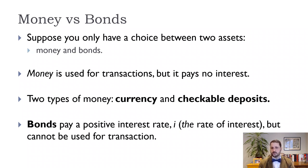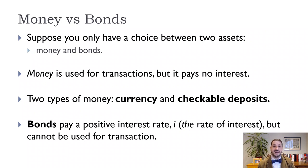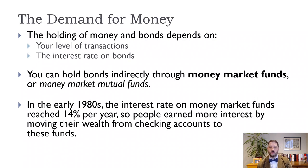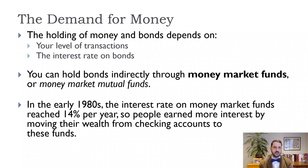The two types of money we focus on — included in what's called M1 — are currency and checkable deposits (checking accounts). We'll assume currency and checkable deposits pay no interest, while bonds pay a positive nominal interest rate i. Even when you use a credit card, money is still needed in the system: the bank that issued the card pays the transaction with money, and you pay the bank back with money at the end of the month.